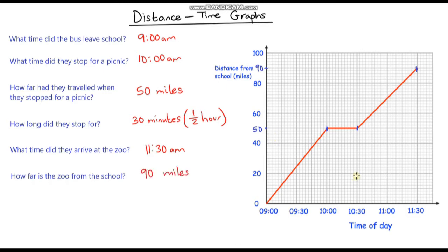So this is just an introduction to show you what a distance time graph looks like. We've got time on the x-axis and distance on the y-axis. We can use a distance time graph to answer lots of different types of questions. I'm going to give you one to do yourself and give you a few questions to see if you can interpret the distance time graph.